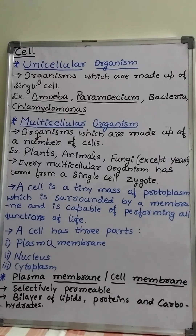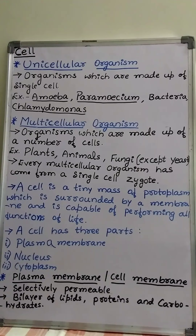The discovery of microorganisms and the microscopic world took place after the invention of magnifying lenses. By the help of magnifying lenses, smaller organisms like unicellular organisms were observed. Unicellular organisms and multicellular organisms are two types of organisms based on the number of cells present in them.